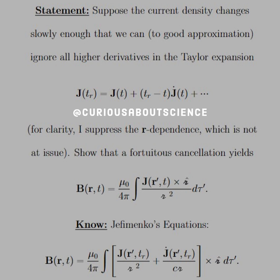Show that a fortuitous cancellation yields B(r,t) = (μ₀/4π) ∫ [J(r',t) × R̂] / R² dτ'. Okay,